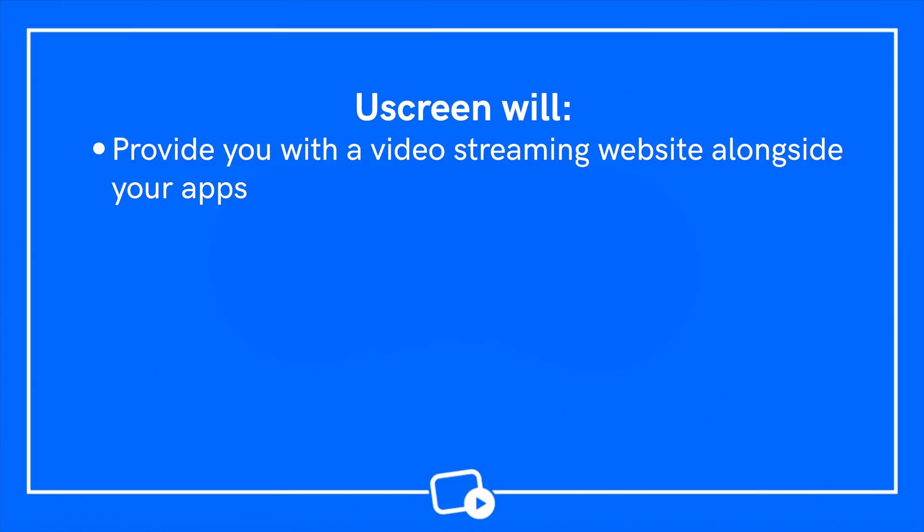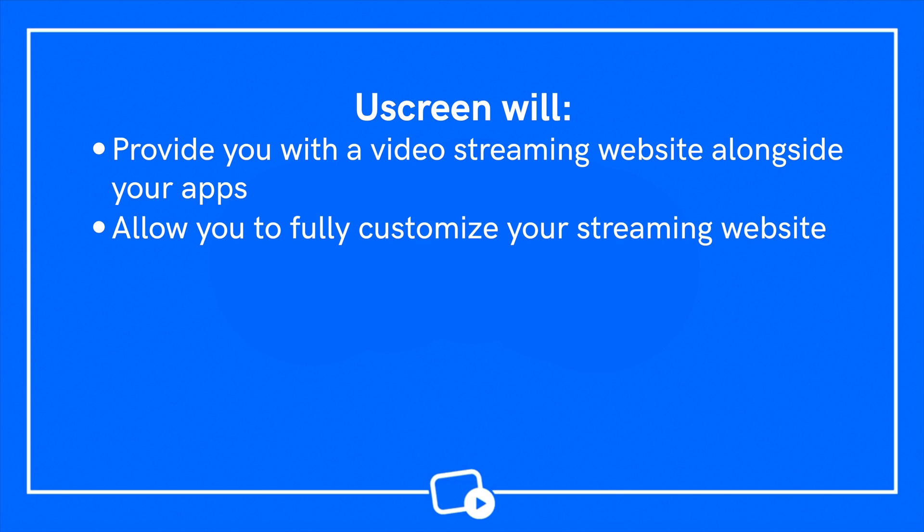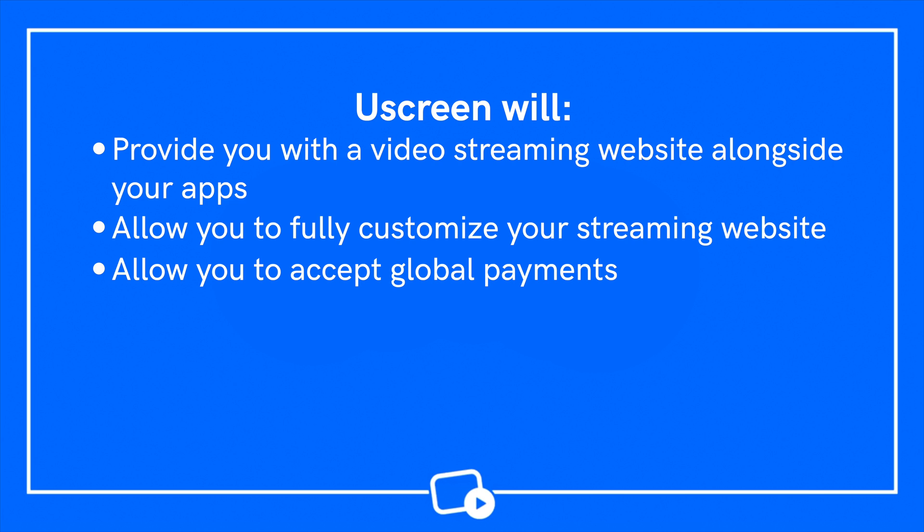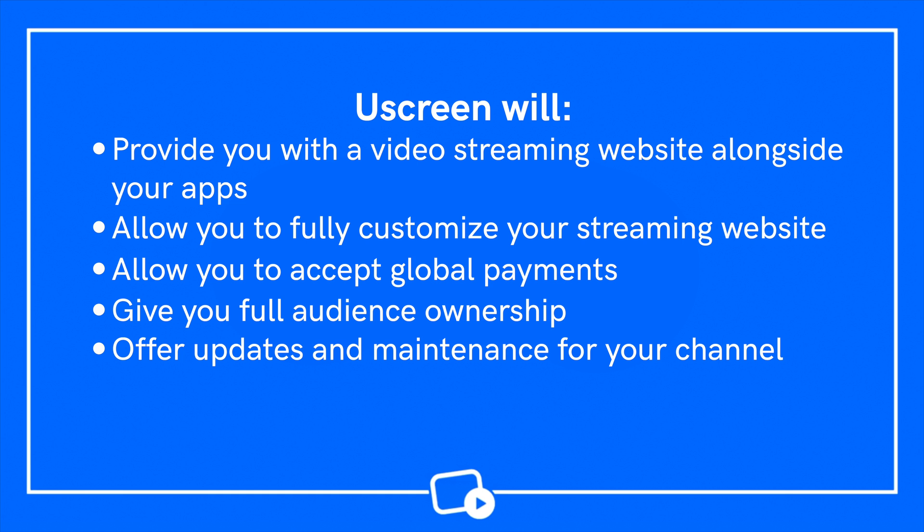By leasing, you get more than just an OTT app — you're getting access to an entire admin area full of robust and easy-to-use tools and features designed to accelerate your success. This type of service is great if you're working with a smaller budget and want to launch your channel without taking a big hit upfront. Uscreen will provide you with a video streaming website alongside your apps, allow you to fully customize your streaming website, accept global payments, give you full audience ownership — which is a big deal — offer updates and maintenance for your channel, and be a technically hands-off solution for you.